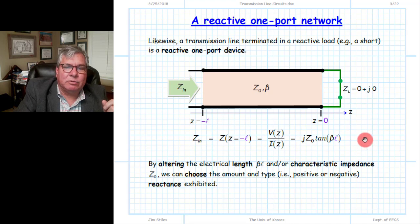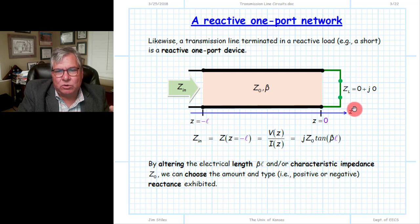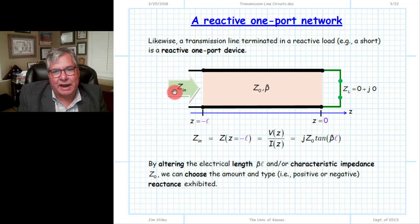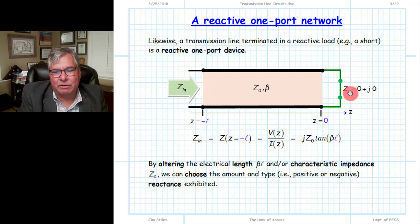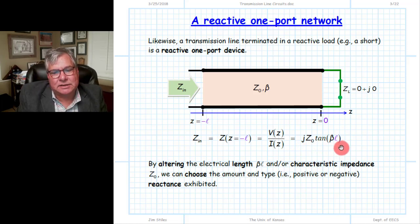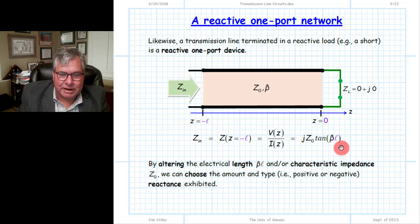The manner in which we create a reactive one-port device is to terminate our transmission line with a load that is purely reactive. The simplest reactive loads to construct are a short circuit or an open circuit. In either case, the resulting input impedance is going to be purely reactive. If we terminate a lossless transmission line — purely inductive and capacitive — with a reactive load, then the input impedance as well as the line impedance at every point on the transmission line must be purely reactive. For the case of a short circuit, the input impedance has a mathematical form that is purely imaginary.